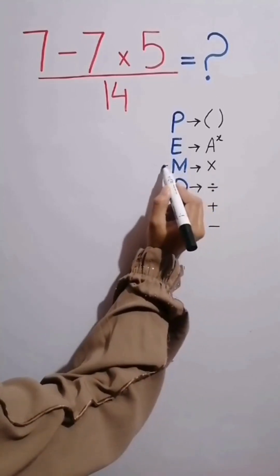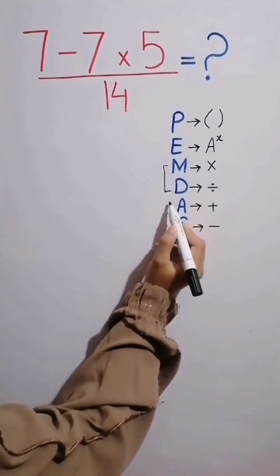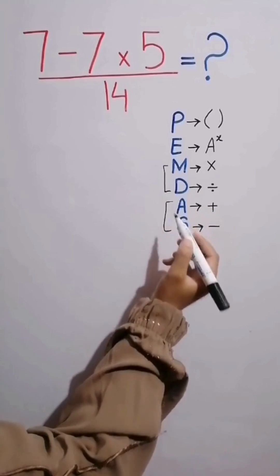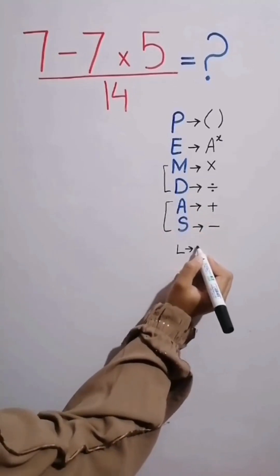Multiplication and division have the same level of priority. Also, addition and subtraction have the same level of priority. When we have both in an expression, we start from the left and simplify the question.